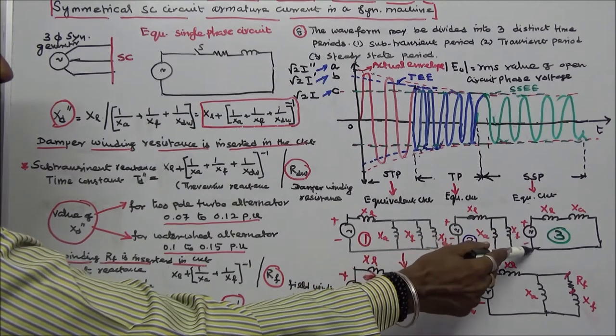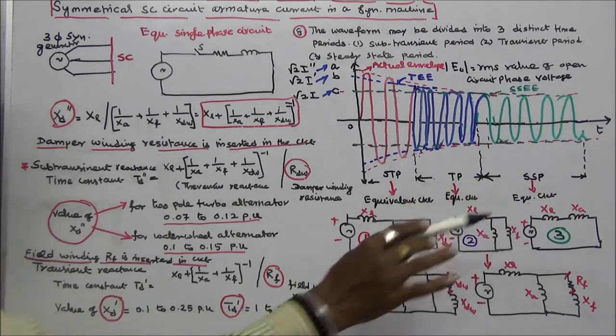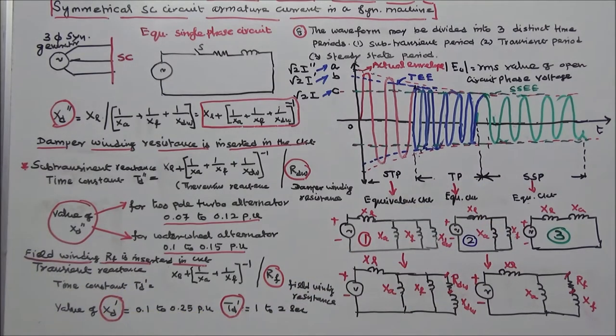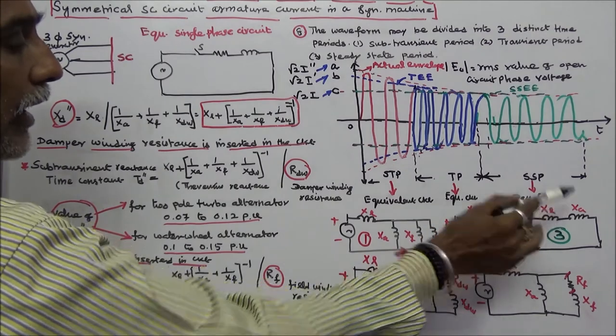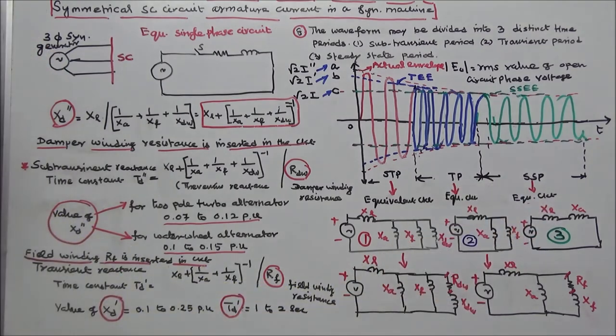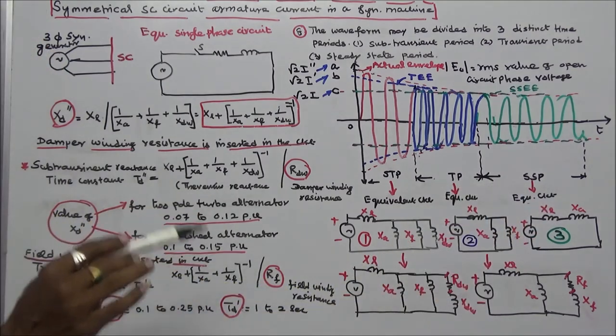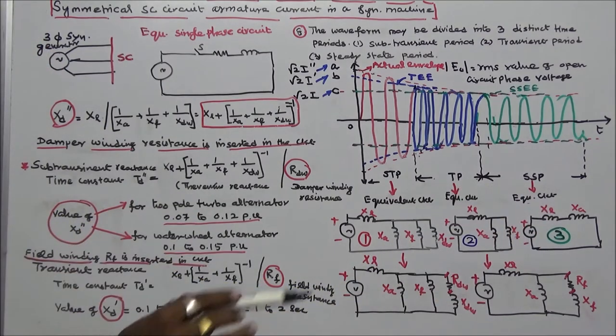Third is the steady-state reactance. Here XL and XA are connected in series. Therefore, XD is equal to XL plus XA.